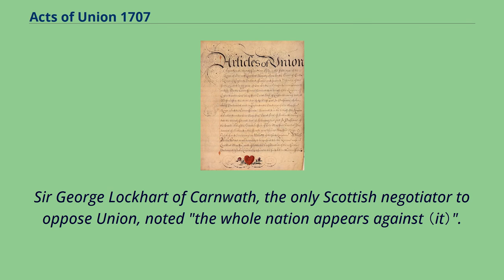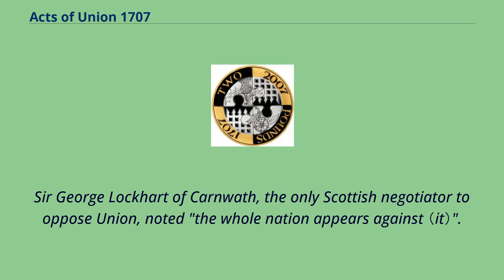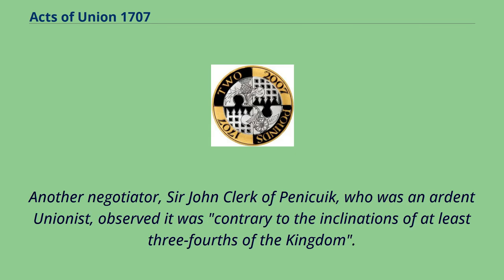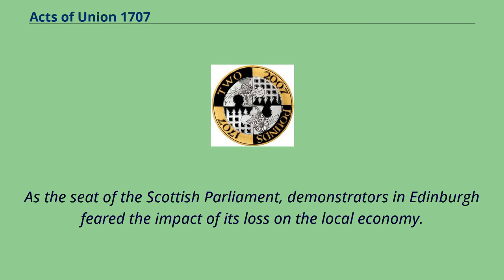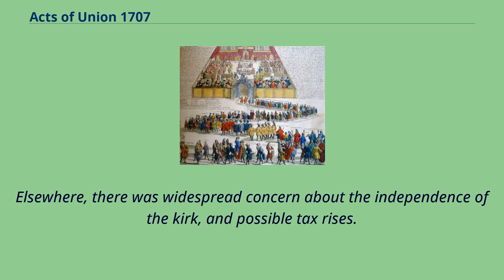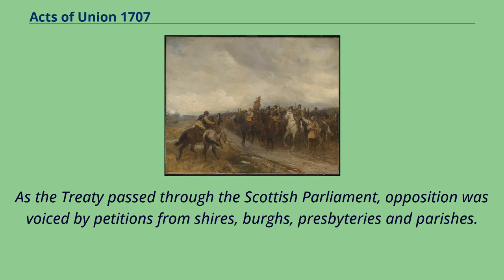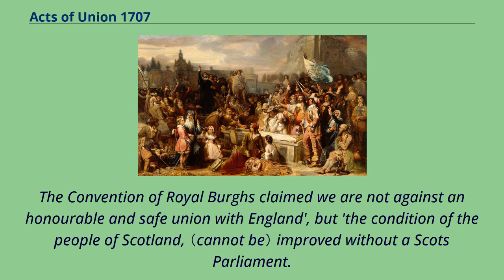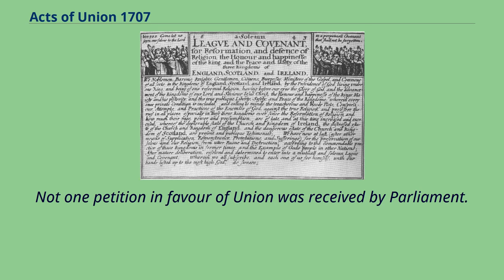Sir George Lockhart of Carnwath, the only Scottish negotiator to oppose union, noted 'the whole nation appears against.' Another negotiator, Sir John Clerk of Penicuik, who was an ardent unionist, observed it was 'contrary to the inclinations of at least three-fourths of the kingdom.' As the seat of the Scottish Parliament, demonstrators in Edinburgh feared the impact of its loss on the local economy. Elsewhere, there was widespread concern about the independence of the Kirk and possible tax rises. As the treaty passed through the Scottish Parliament, opposition was voiced by petitions from shires, burghs, presbyteries, and parishes.